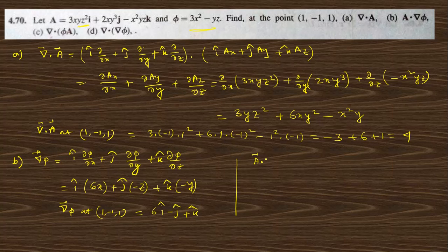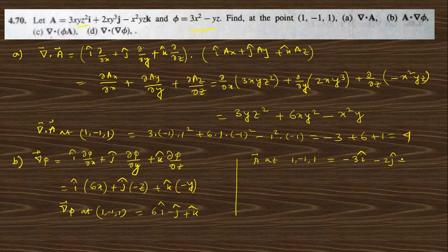The vector A at (1, −1, 1) equals −3i-cap − 2j-cap + k-cap. Then A·grad φ = (−3)(6) + (−2)(−1) + (1)(1) = −18 + 2 + 1 = −15.